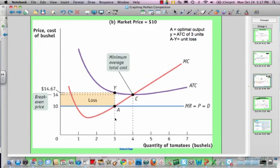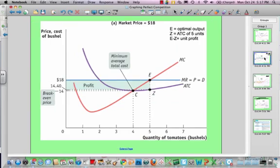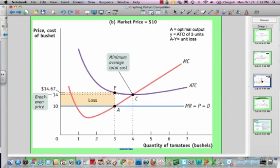It's Y minus A times the quantity being produced. And here, that quantity produced happens to be three units. So it's $14.67 minus $10 times three units. So that's short-run looking at what happens when operating at a profit, when operating at a loss. What does the amount of profit or loss look like?